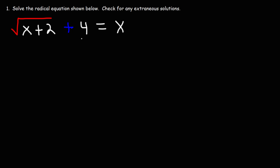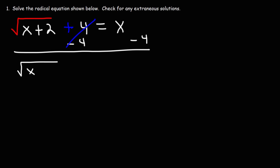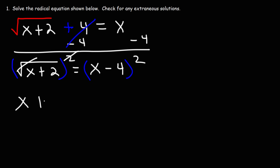Let's begin with the equation: the square root of x plus 2, plus 4, equals x. We'll start by moving the 4 to the other side by subtracting both sides by 4. What we have left is the square root of x plus 2, equal to x minus 4. To get rid of the square root symbol, we need to square both sides. On the left side, the square and the square root cancel, giving us just x plus 2.